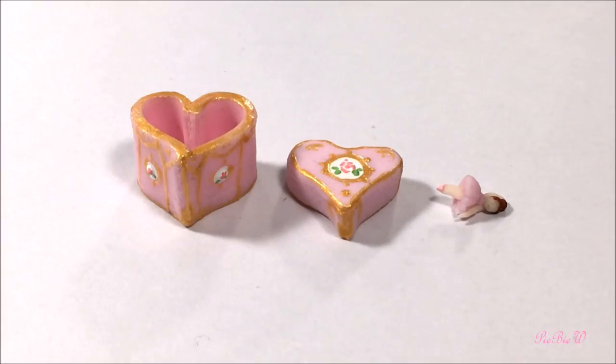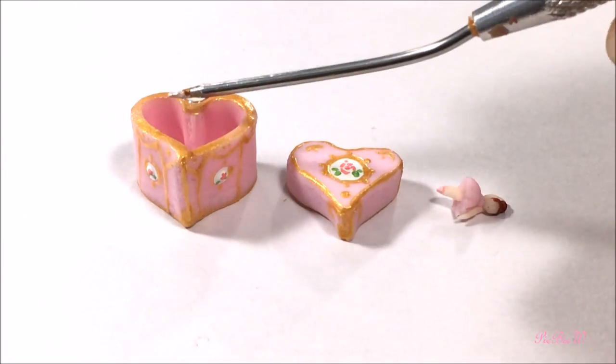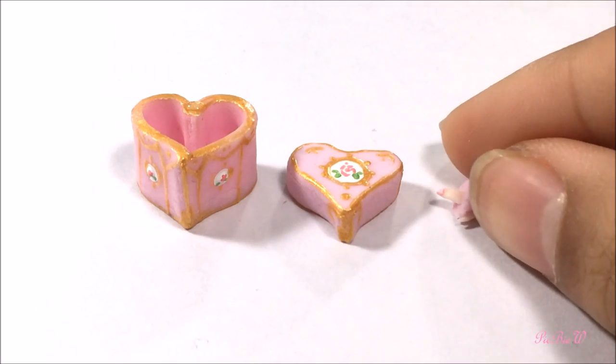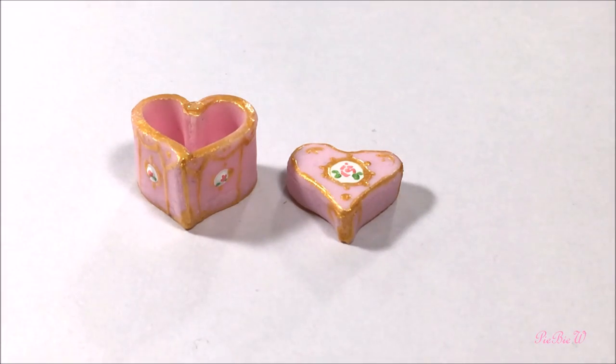And then after you are done, you are just going to paint however you like. I used some gold paint and made some roses in there. And I also painted the ballerina. And then using super glue, you are just going to attach everything together.